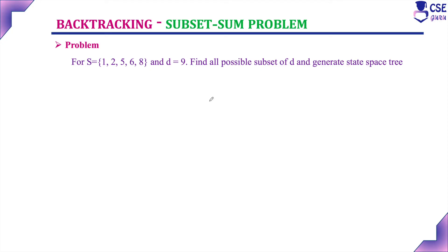In the previous session we constructed the state space tree depth-wise, and in this session we will construct it level-wise. The actual procedure requires constructing depth-wise, and whenever we reach a dead end we use the backtracking technique. Here, we are going to construct the state space tree level-wise. We will not explicitly show the backtracking technique, since the depth-wise procedure is difficult to understand and tedious. Constructing level-wise with two choices for each node is easier to understand.